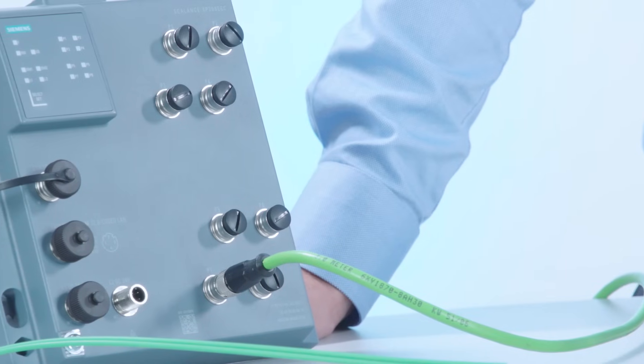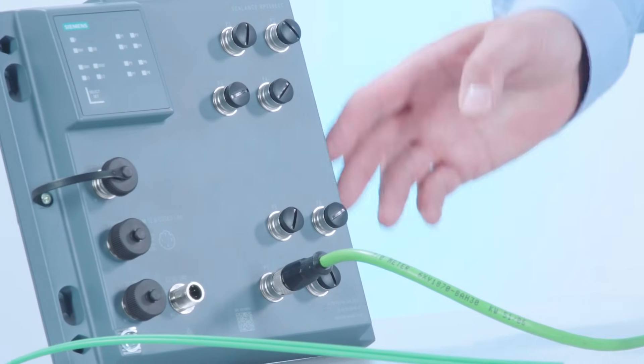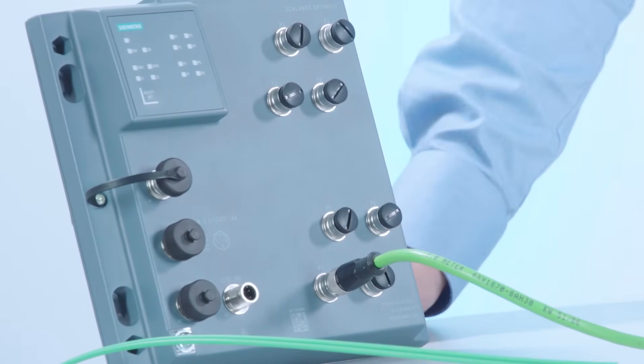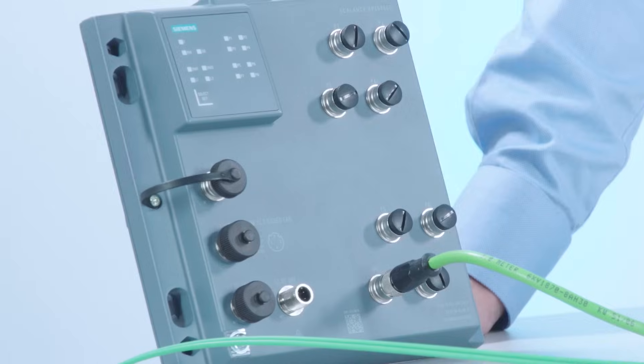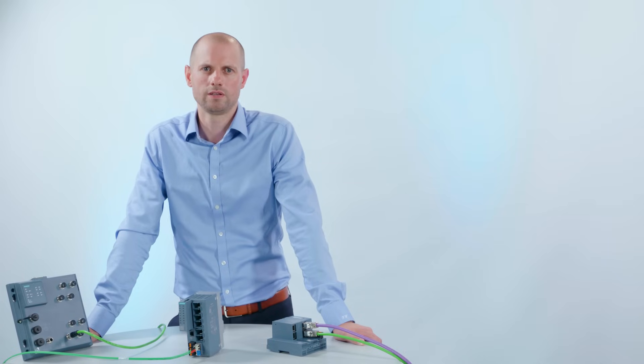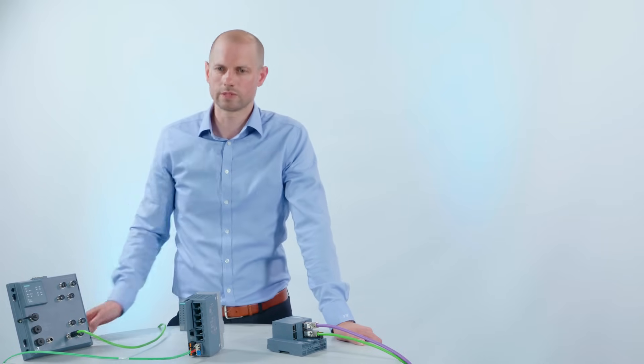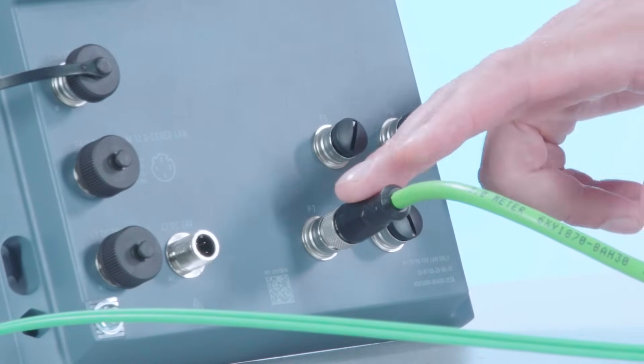Scalance XP200 switches cover another important field of application. They provide a metal enclosure and a flat design and are equipped for use outside the control cabinet. In real terms, this means that the devices are connected by robust M12 plugs, which fulfill an IP65 degree of protection.